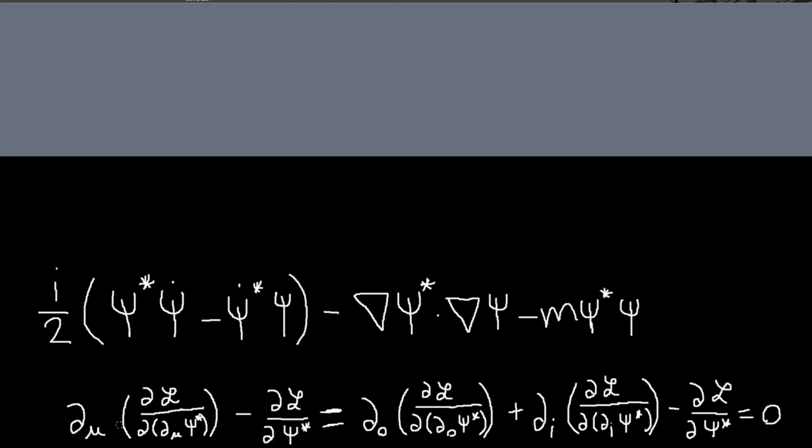I'm just going to expand this. I'm summing over mu, so I'm going to break it into the time part and the spatial part. So zero is the time part, and then i is still summing and it just sums over the spatial parts, so 1, 2, and 3. And this term is still here, it hasn't changed.